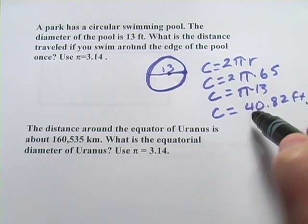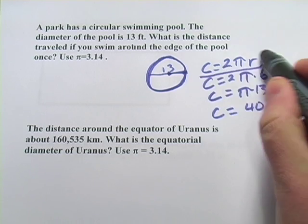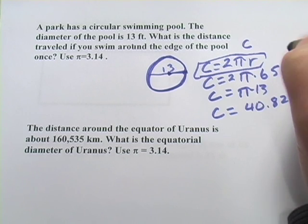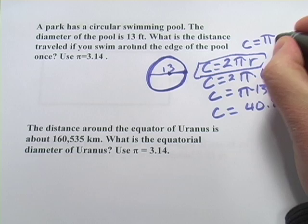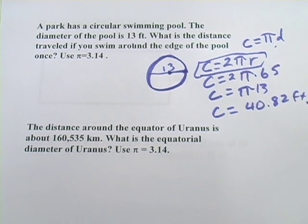You may have noticed from this last one that we have this factor of 2 along with the R here. So this is the formula we normally use for circumference. But another formula that's just as valid would be the circumference equals pi times the diameter, since the diameter is twice the radius. So if that comes in handy for you, you can use that.